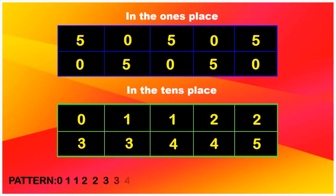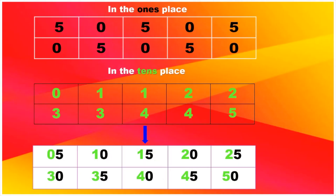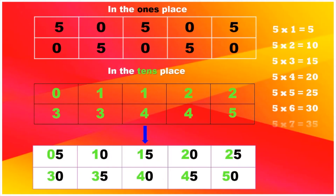Thus, the pattern formed in five columns and two rows is 0, 1, 1, 2, 2, 3, 3, 4, 4 and 5. You have the five times table now! You can see that this is an easy way to learn the five times table.